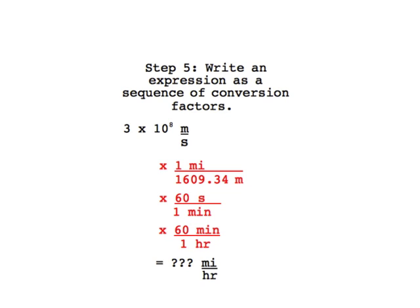In this example, we have meters in the numerator. That gives us one conversion factor, one mile per 1609.34 meters. Putting the meters in the denominator allows us to cancel with the meter in the numerator in the initial unit.